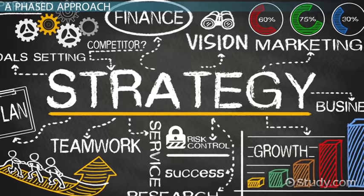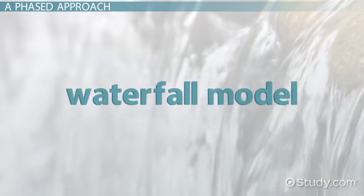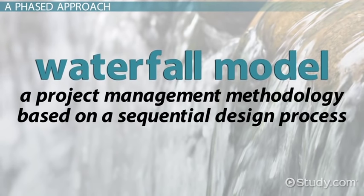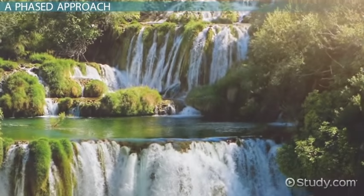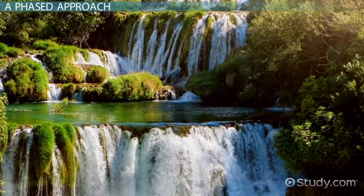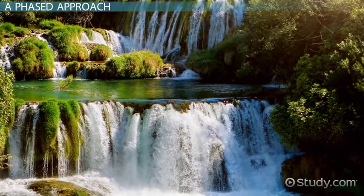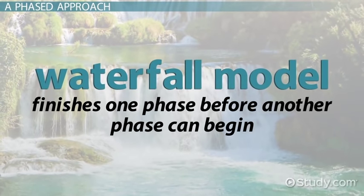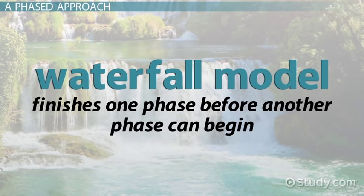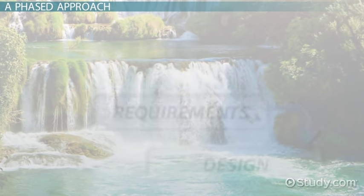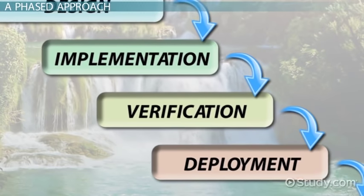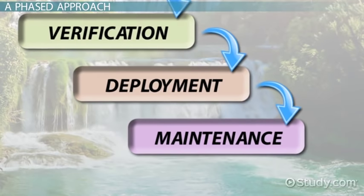One of the many project management models in use today, the waterfall model is one of the most easily understandable and manageable models. The waterfall model is a project management methodology based on a sequential design process. Much like a waterfall filling lower-level pools, phases in the waterfall model flow from one to another, finishing one phase completely before another can begin. Developed as a software development lifecycle model, waterfall methodology lends itself to projects that are small in size and whose requirements can be definitively determined up front.